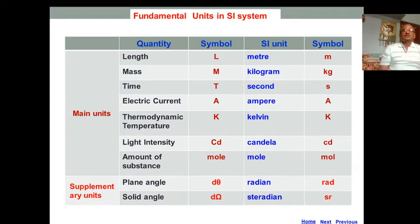Now, come to the SI system. In SI system, there are seven quantities taken as fundamental quantities, or main quantities. So we can say their units are fundamental units: length, mass, time, electric current, thermodynamic temperature, intensity of light, and amount of substance are the fundamental quantities.